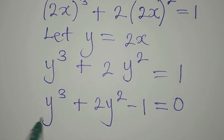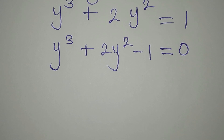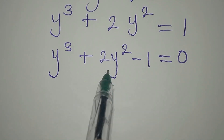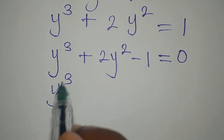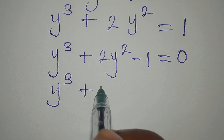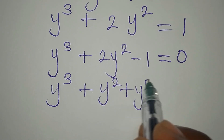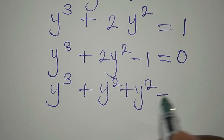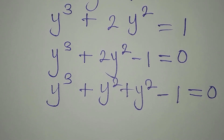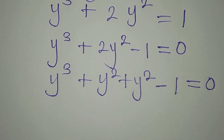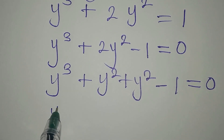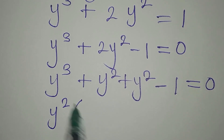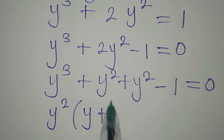Let's look for a way to factorize this. To factorize this, I want to split the middle terms. We have y to the power of 3 plus 2y squared, which is y squared plus y squared. Then minus 1. This is equal to 0. The next thing is to factorize these two groups. From the first group, what is common is y squared, giving y squared times (y plus 1).